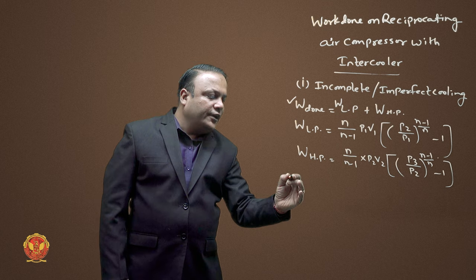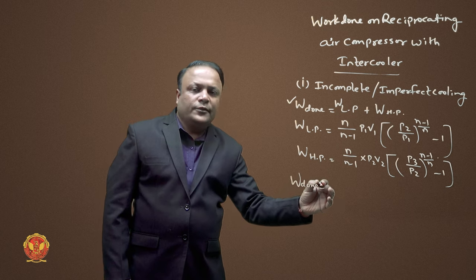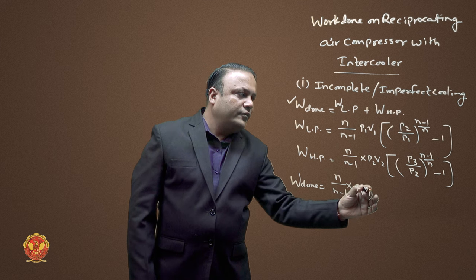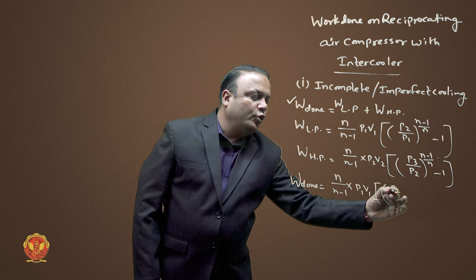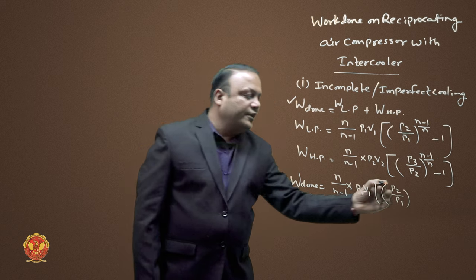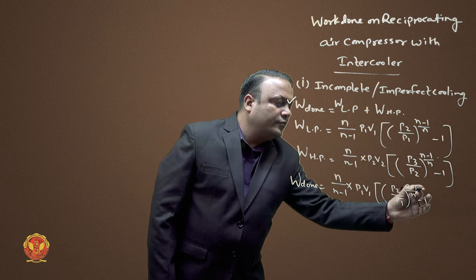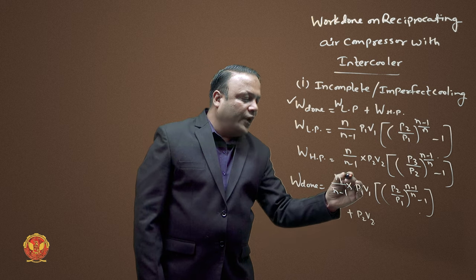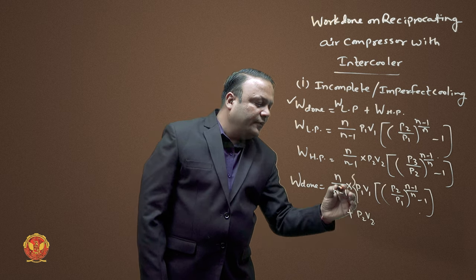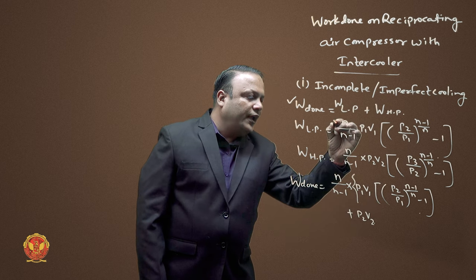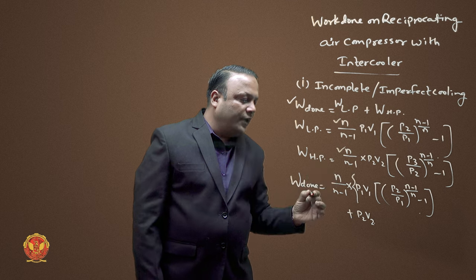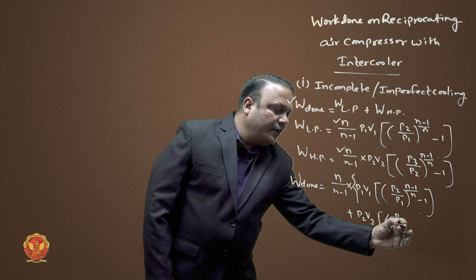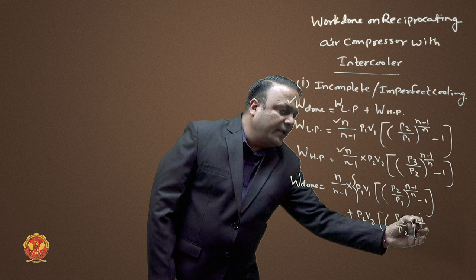So the total work done is written as n/(n-1) × P1V1 × [(P2/P1)^((n-1)/n) − 1] plus P2V2 × [(P3/P2)^((n-1)/n) − 1]. Both n/(n-1) terms are common — one for LP and one for HP — so we can factor them out into a single bracket.